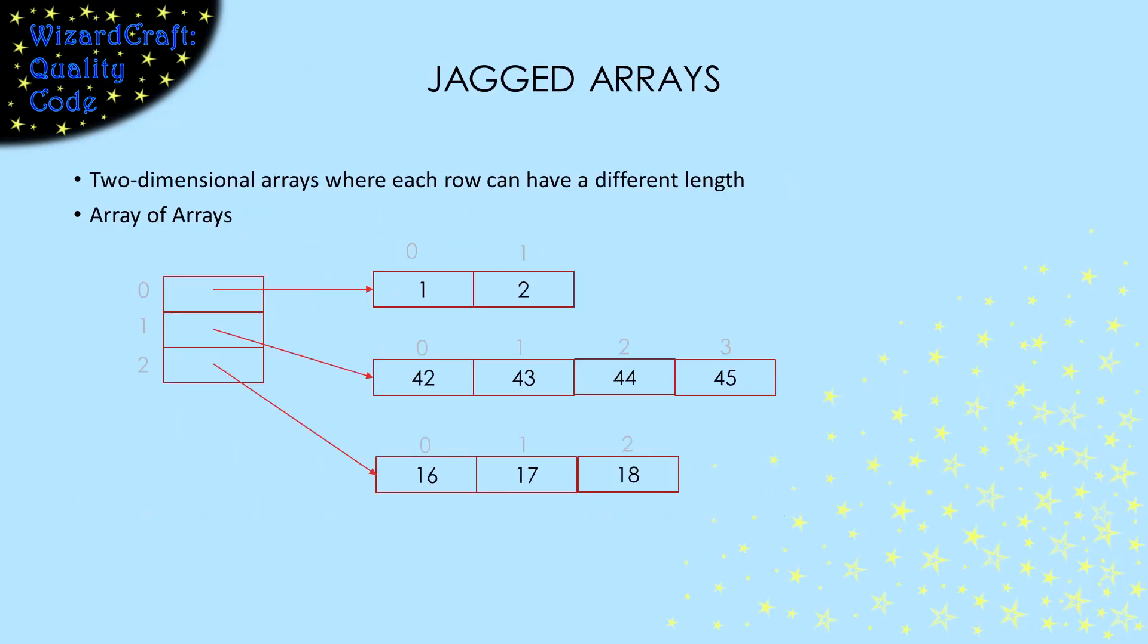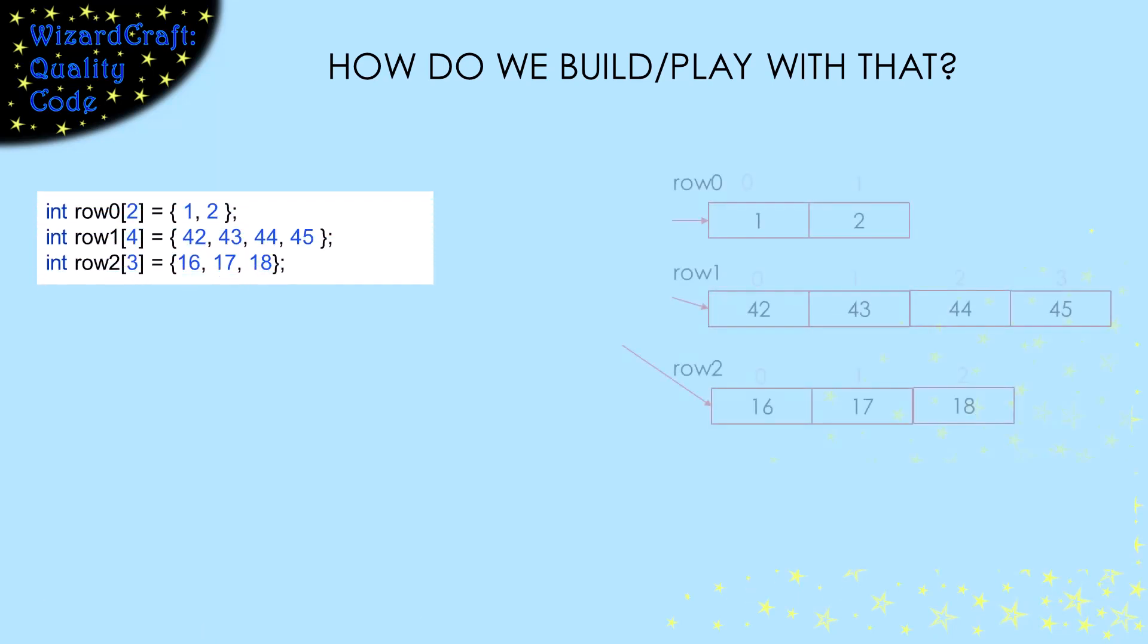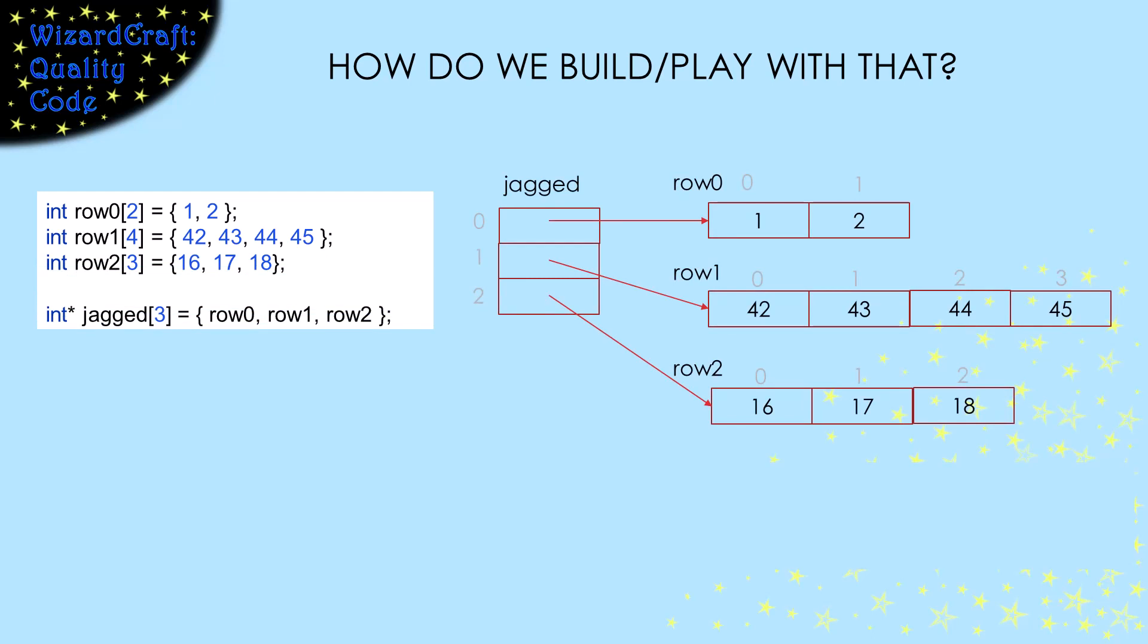The way to build a jagged array in C is to build it as an array of arrays. We have one array that has an entry for each row. Each entry is a pointer to an array containing the data for that row. Later, when we learn about dynamic memory allocation, we can make these at runtime. But for now, we can build them with array initializers. We use one initializer for each row, and then one to build the array pointing at the rows.